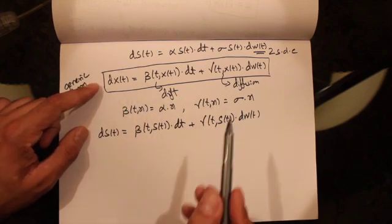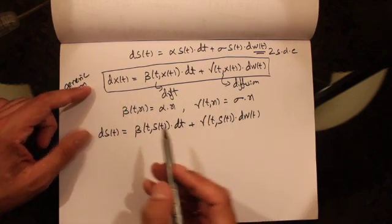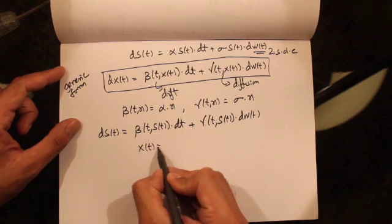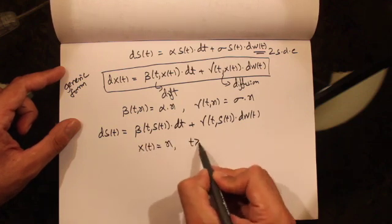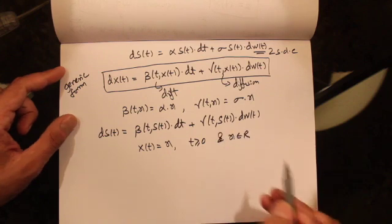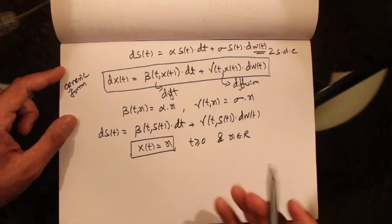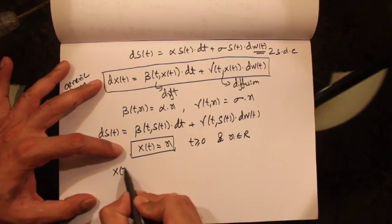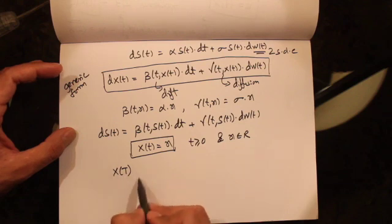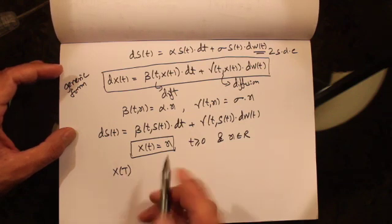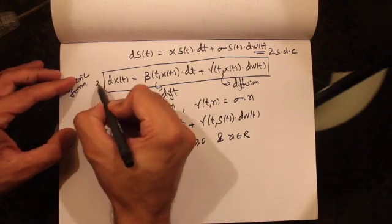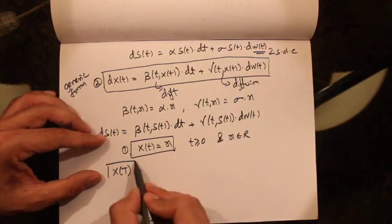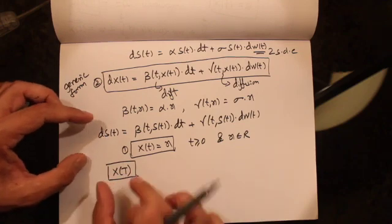Many times when we are given a stochastic differential equation we would also be given an initial condition. Let's consider the stochastic differential equation with the initial condition x(t) = x, where t ≥ 0 and x ∈ ℝ. What we are required to do is solve for a stochastic process x(t) that satisfies this initial condition and satisfies this stochastic differential equation.